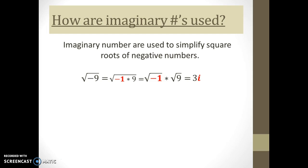You'll notice that I put the i after the three. We treat i as though it's a variable — now it's not, it's a constant — but you would never write x three, you'd write three x. You'd never write pi three, you'd write three pi. In the same way, we write three i.